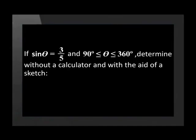Let's apply this information in a question. If the sine of theta equals 3 over 5 and theta is greater than 90 degrees and smaller than 360 degrees, determine with the aid of a sketch the value of cos theta and tan theta. Whenever a question tells us to draw a sketch, it usually means that the sketch is worth some marks. The sketch will help us see where theta lies on the Cartesian plane.